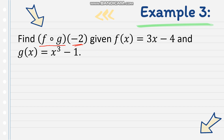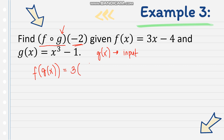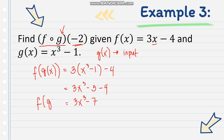So g of x is our input, and we will use it to evaluate f of x. We replace the x variable in f of x with g of x: f of g of x equals 3 times (x cubed minus 1) minus 4. Simplifying: 3x cubed minus 3 minus 4, which gives us 3x cubed minus 7. This is now f of g of x.